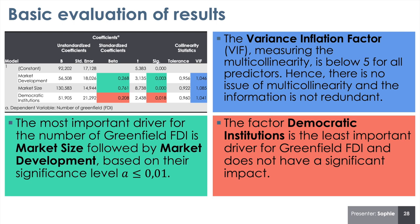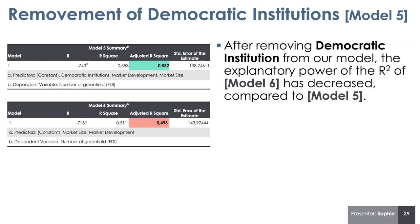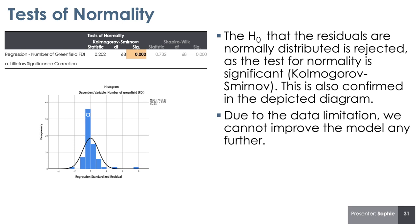For example, the number of Greenfield FDI will increase on average by 0.76% if the factor of market size increases by 1. We then tried to improve our model by excluding democratic institutions. However, the adjusted R-squared shows that model 6 without that factor has lower explanatory power, so we keep the factor and continue with model 5. Looking at the histogram and the significance test for normality, we reject the null hypothesis of normal distribution, meaning we have non-constant variance of residuals, suggesting missing relevant determinants. Due to data limitations, we cannot improve the model further.